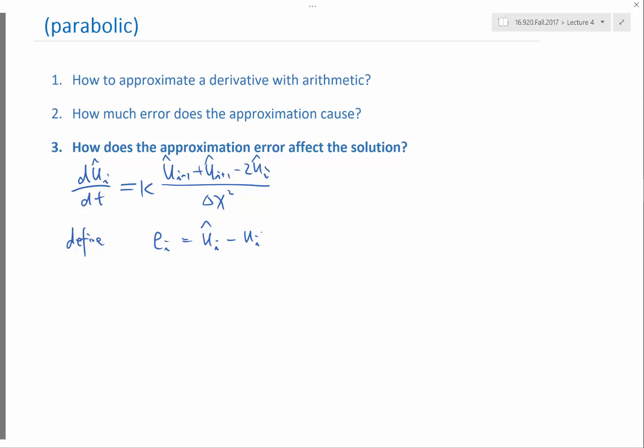Then we know the error also satisfies a particular equation. The error is going to satisfy dei/dt equal to kappa times (ei minus 1 plus ei plus 1 minus 2 times ei), the same finite difference operator.